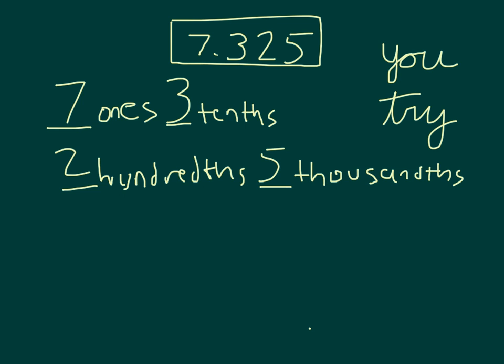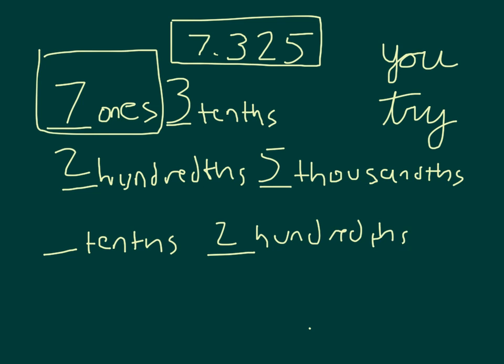Now what we could do though is that we could break apart these 7 ones into tenths and each of those ones is worth 10 tenths. Pause the video. Remember to put it together with 3 tenths to see what it is that you would come up with. And then so now what we're doing again is we're writing something along the lines of something tenths along with still those two hundredths along with those five thousandths.